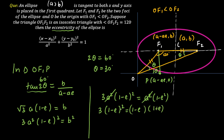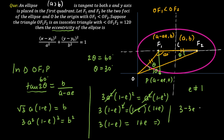Cancelling (1 minus e) from both sides — valid because eccentricity cannot equal 1 for an ellipse (that would be a parabola), so eccentricity must be less than 1. This gives 3(1 minus e) = 1 plus e, so 3 minus 3e = 1 plus e, meaning 4e = 2. Therefore the eccentricity equals 1/2, and that is the final answer.